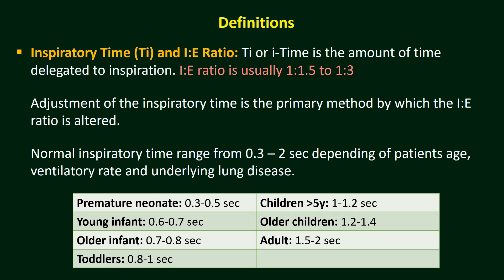In premature neonates, Inspiratory Time is 0.3 to 0.5 seconds; young infant 0.6 to 0.7 seconds; older infant 0.7 to 0.8 seconds; toddler 0.8 to 1 second; children more than 5 years 1 to 1.2 seconds; older children 1.2 to 1.4 seconds; and in adults 1.5 to 2 seconds.